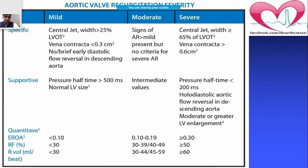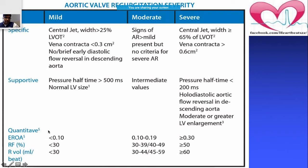There are also indirect parameters for aortic valve regurgitation severity. Pressure half-time (PHT): if it is more than 500 milliseconds it indicates a normal LV; if PHT is less than 200 milliseconds it will be severe. You can use these and other indirect parameters for quantitative classification.